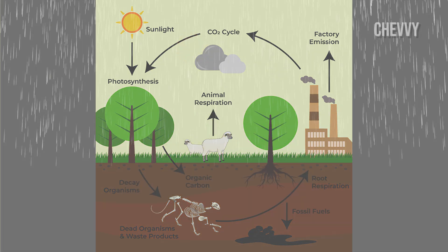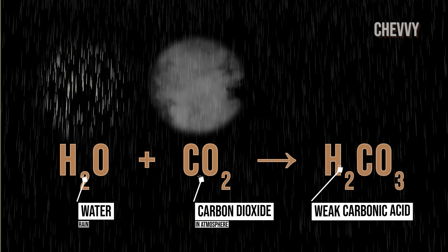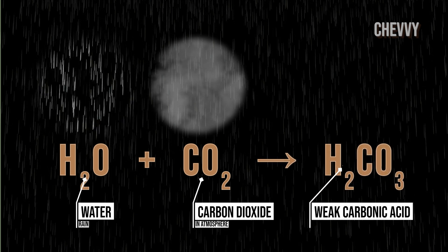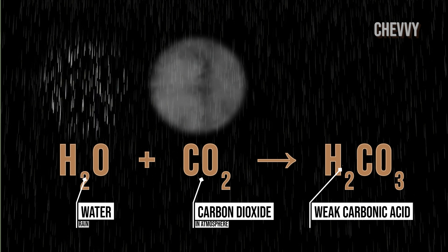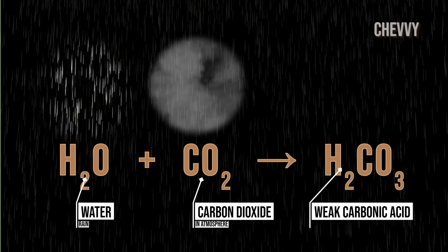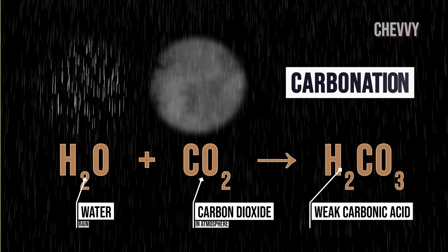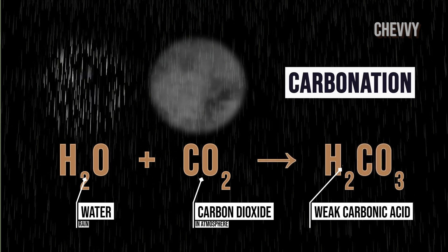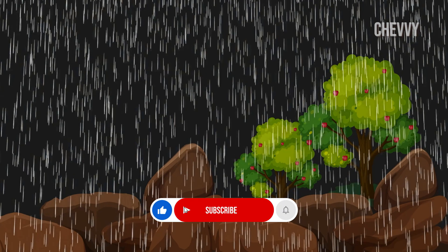Rain starts the transfer of carbon from the atmosphere to the rocks, or lithosphere. A weak acid called carbonic acid is created when atmospheric carbon reacts with water and sinks to the surface. Carbonation is the name of the acid production process. Through a process known as chemical weathering, weak carbonic acid dissolves rock.